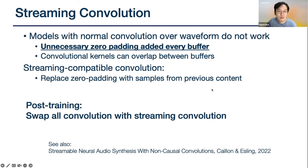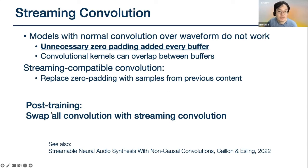An example of streaming convolution is available on the Newton SDK examples. You don't have to worry about all this during training or before training — you just have to, after training, swap the convolution layers with streaming compatible convolution and copy the weights for the convolution over to this new streaming convolution layer.